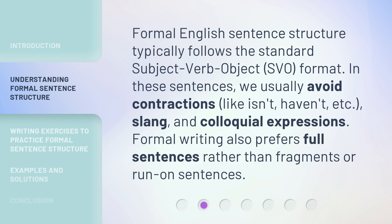Formal English sentence structure typically follows the standard subject-verb-object (SVO) format. In these sentences, we usually avoid contractions like isn't, haven't, etc., slang, and colloquial expressions. Formal writing also prefers full sentences rather than fragments or run-on sentences.